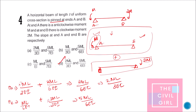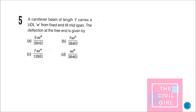Next question: a cantilever beam of length L carries a UDL W till midspan. What is the deflection at the free end? As we have already seen in the previous video, the deflection is equal to 7WL⁴ / 384EI. The answer is option D.